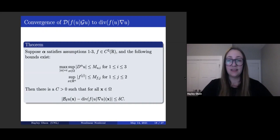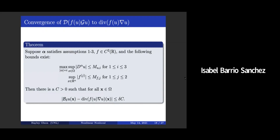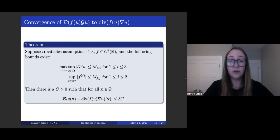So one of the big things is getting that the operators converge to one another. We already mentioned that the nonlocal Laplacian converges to its classical counterpart. We want to see a similar result for this nonlinear diffusion. And we do need quite a bit of regularity in terms of the functions that we're using. Our function f has to be bounded, it also has to have a bounded first and second derivative, and the function u has to be fairly nice. But when we do that, we do get that that nonlocal operator will converge to its classical counterpart.